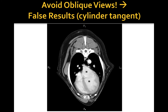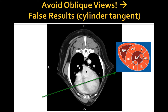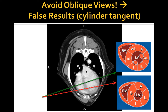When assessing LV function, it is very important to avoid oblique views due to the so-called cylinder tangent effect, which occurs if the plane of the beam enters the chamber or vessel at a tangent, falsely reducing its diameter. This image is a transverse view of the canine thorax obtained by CT scan with contrast. If you put the ultrasound beam at the level of the papillary muscles, you will get a standard right parasternal short axis view. If you redirect your beam towards the left ventricular apex, the ventricular walls will appear thicker and the LV lumen will appear smaller. By obtaining an oblique view in a dog with impaired LV function, it may be misinterpreted as normal or even hyperdynamic. Therefore, it is important to visualize the papillary muscles and acquire the classic mushroom view when interpreting LV function in the right parasternal short axis view.